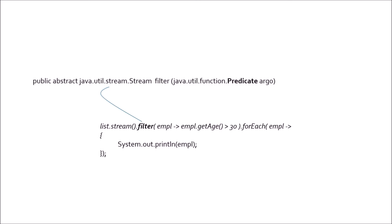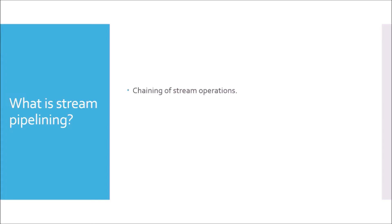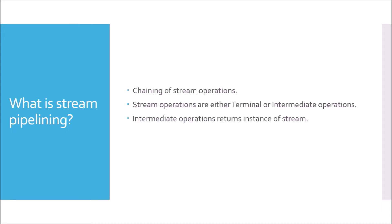Moving to the next question: What is stream pipelining? Stream pipelining is generally the chaining of stream operations. Stream operations are either terminal or intermediate operations. Intermediate operations return an instance of Stream, and at the end there must be a terminal operation to end the chaining. So stream contains both terminal operations and intermediate operations, and you can chain another operation because intermediate operations return an instance of Stream.